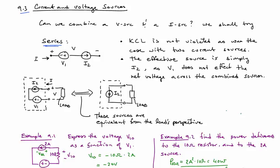You're not going to violate KCL if you put a voltage source in series with a current source because they're not both battling for how much current is going to flow. One sets the current, the current source, and the voltage source is just along for the ride.